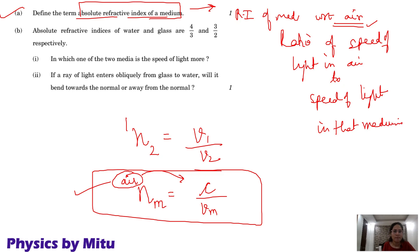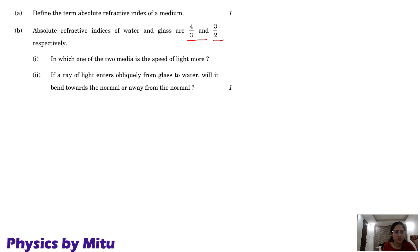Next question, absolute refractive index of water and glass given, which of the two media is the speed of light more? More the refractive index, lesser is the speed of light.